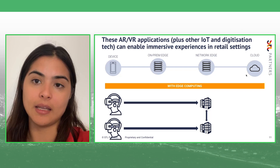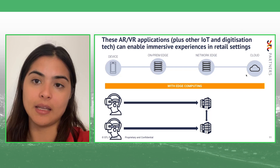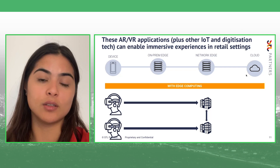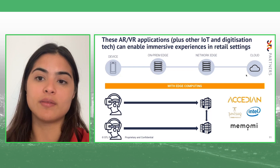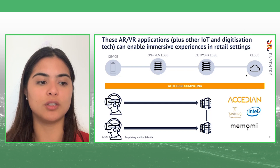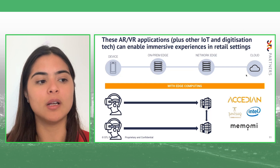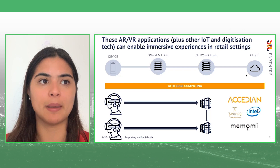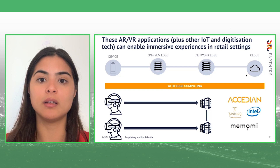In the future, as the quality of AR/VR images improves, that puts a huge strain on bandwidth and drives the need to move that data to an edge rather than running it from the cloud. There are examples here of companies starting to work in this space — some in AR/VR, some in retail immersive experiences more broadly — using IoT and digitization technology. Memomi, for example, is building an augmented reality mirror so you can go to a changing room and try different things on virtually without having to physically get the clothes.